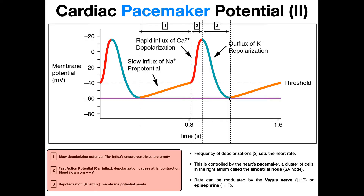Why is it unstable? Because it never goes to rest. Why does it never go to rest? Because those sodium channels open at negative 60, and that's exactly what the repolarization takes it to — negative 60. These cells never come to rest; their membrane potential is unstable. And do we want a pacemaker cell to come to rest? Never.